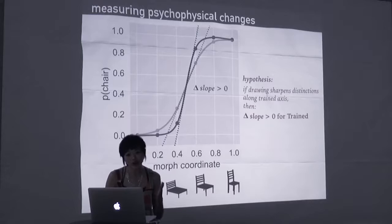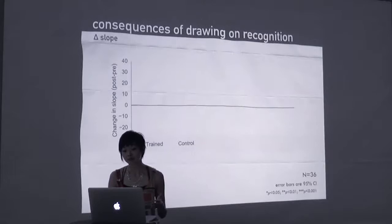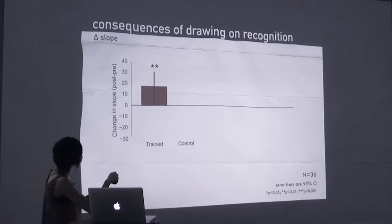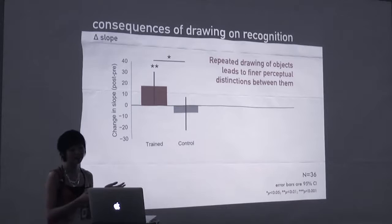And we hypothesized that if drawing is really sharpening the representation of these endpoint objects, then we should be able to measure this using the slope parameter. The trained slope should increase. Okay, so what I'm plotting here on the y-axis is a change in slope between the pre-test and the post-test for the trained control conditions. What we found is that the slope actually had grown steeper for the trained axis, error bars here are 95% confidence intervals, suggesting that some aspect of the training, while only at the endpoints, had led to sharper discrimination across morphs.